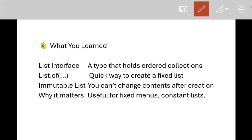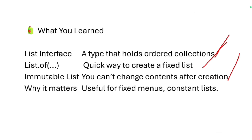What we learned in this story: we can create a List — it's an interface which holds an ordered collection. `List.of()` creates a fixed, immutable list that you can't change after creation. This is useful for fixed menus or constants lists.